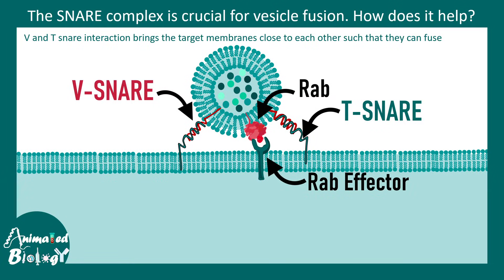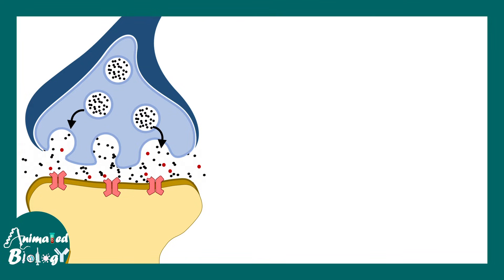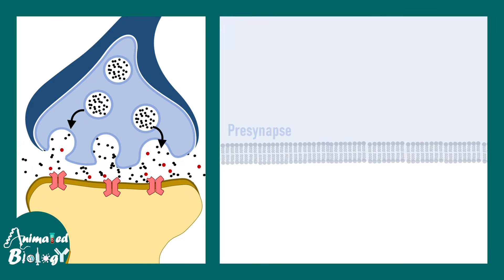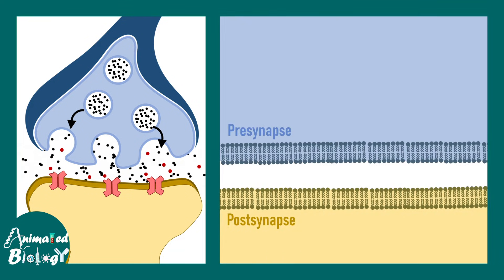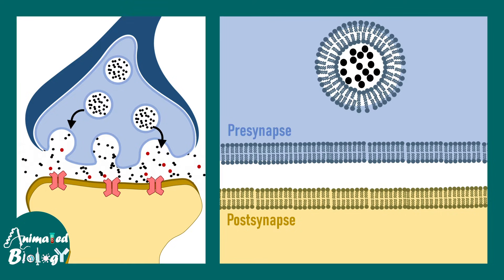Now let us look at the nitty-gritty of vesicle fusion by taking the example of synaptic vesicles. In the synapse, the neurotransmitter-containing vesicle must fuse with the presynaptic membrane so that the neurotransmitter can be released into the synaptic cleft. We are now zooming into the synapse — here is the pre- and post-synapse, and here is the neurotransmitter-containing vesicle. Specific SNARE interactions trigger the vesicle fusion.